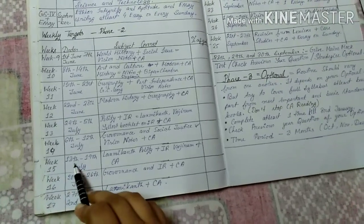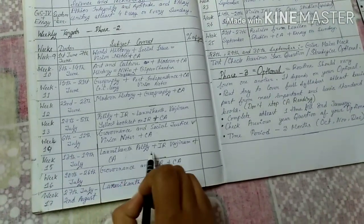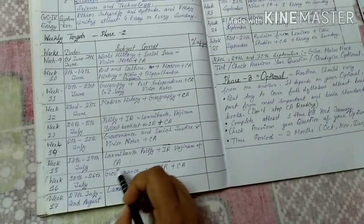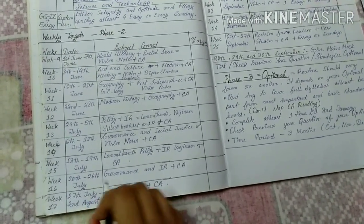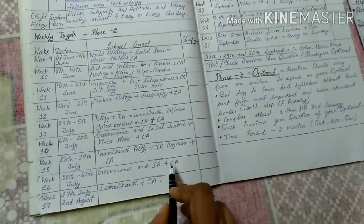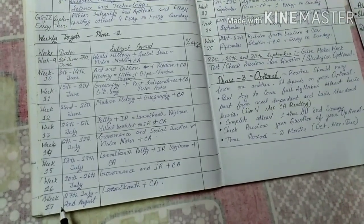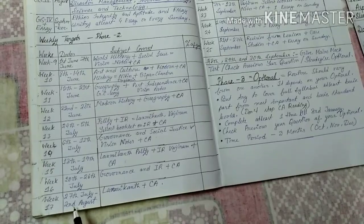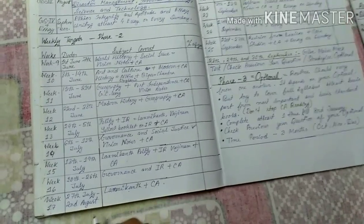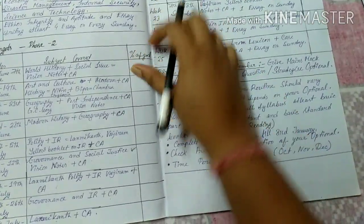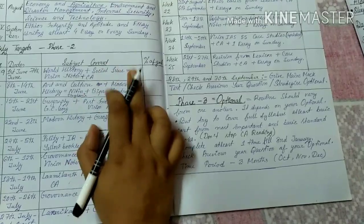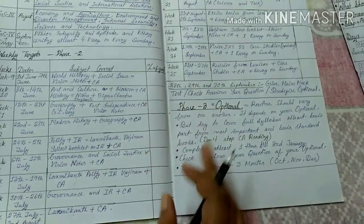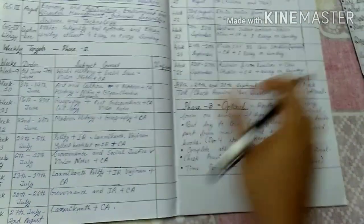Week 15 (13th–19th July): Lakshmikanth, Polity and IR, Vajiram, plus Current Affairs. Week 16 (20th–26th July): Governance and IR plus Current Affairs. Week 17 (27th July–2nd August): Lakshmikanth plus Current Affairs. After completing these weekly targets, track and record the percentage of your goal achieved in each section.